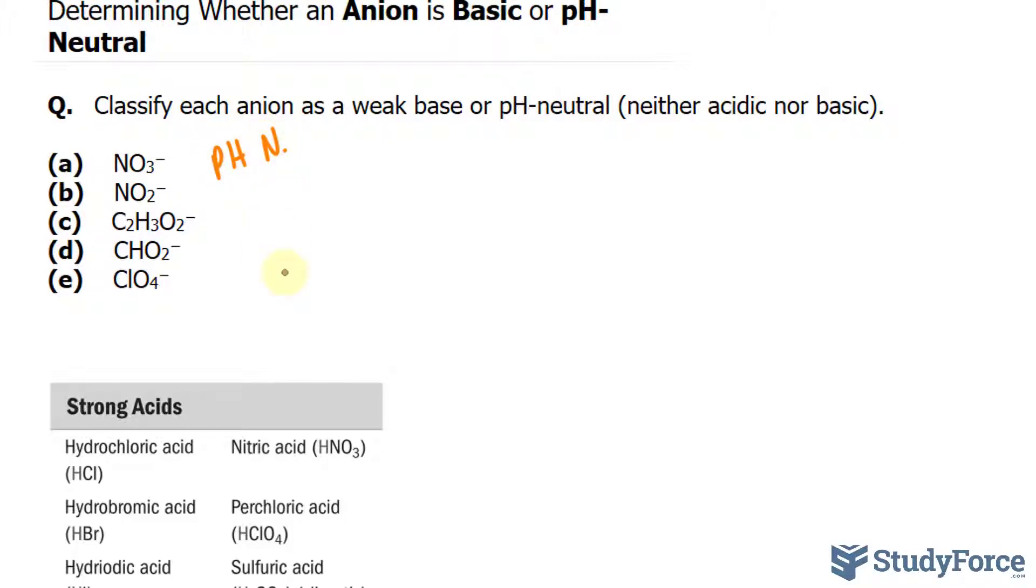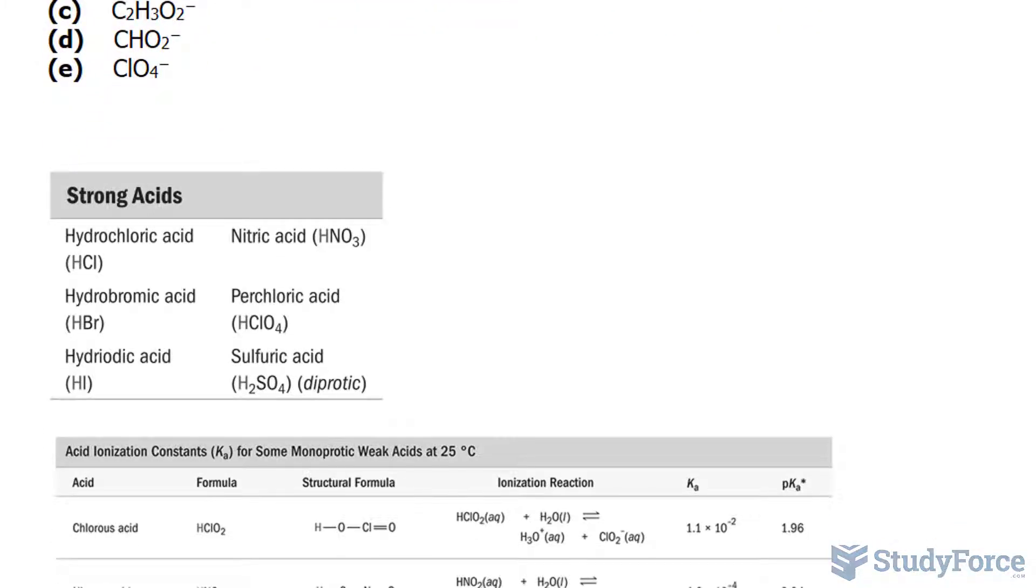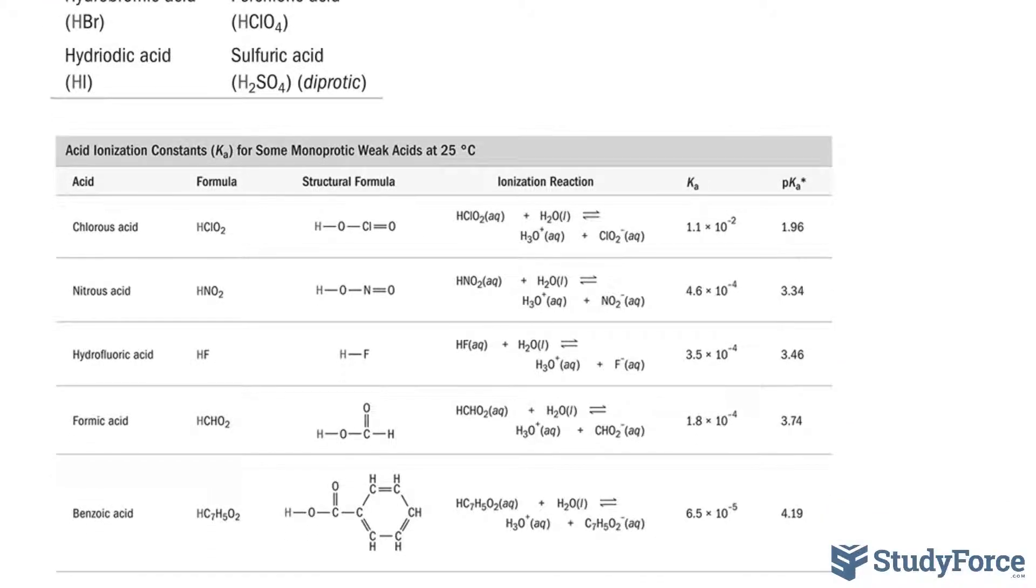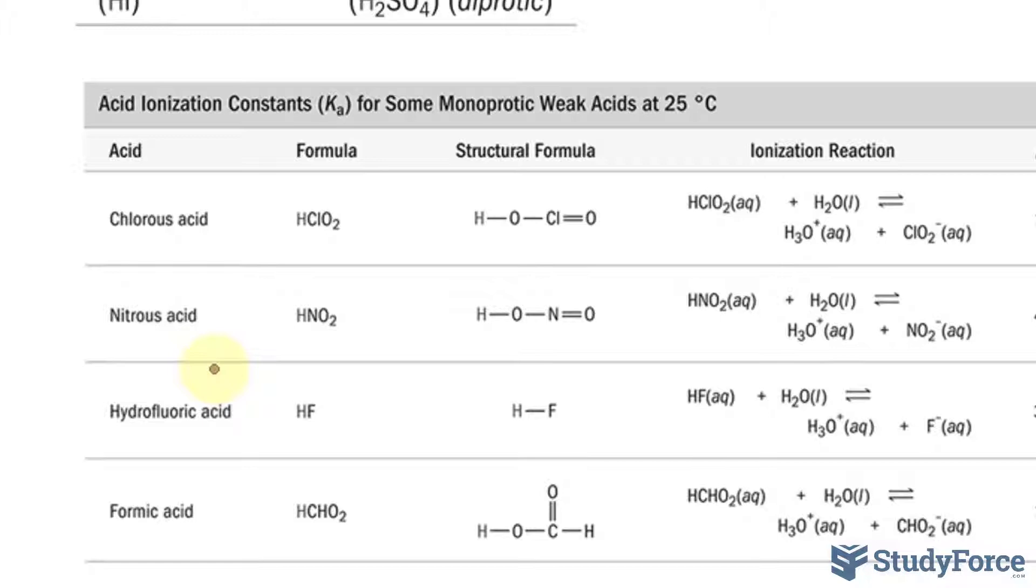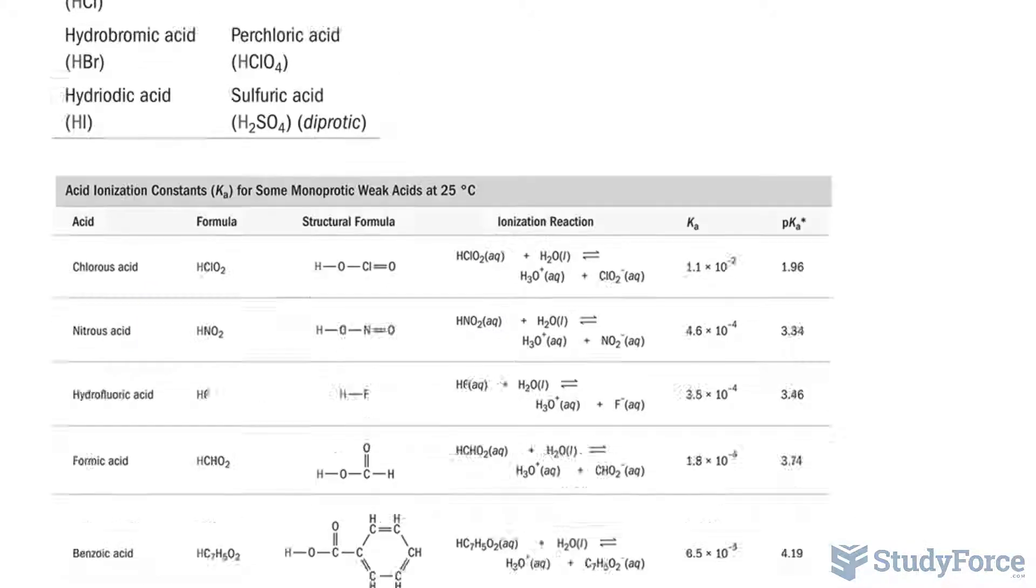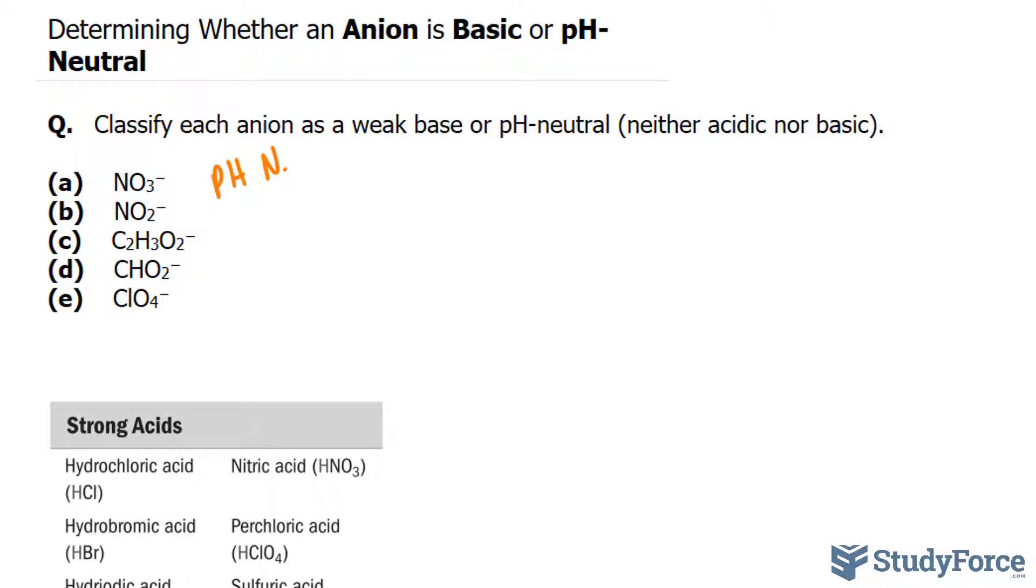In question B, we have NO2-. There is no derivative of NO2- in this first table, but you could find one here. Take a look. Nitrous acid has the chemical formula HNO2, and it is a weak acid. It will dissociate incompletely, forming a conjugate base. So this is a conjugate base, therefore, a weak base.